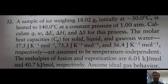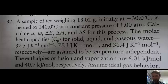Here is the problem we are going to work on — number 32 from chapter 10 of the textbook. A sample of ice weighing 18.02 grams, which is one mole of water, initially at minus 30 degrees C, is heated to 140 degrees C at a constant pressure of one atmosphere. Calculate Q, W, delta E, delta H, and delta S for this process. The molar heat capacities for solid, liquid, and gaseous water are given and assumed to be temperature independent, and the enthalpies of fusion and vaporization are also given.